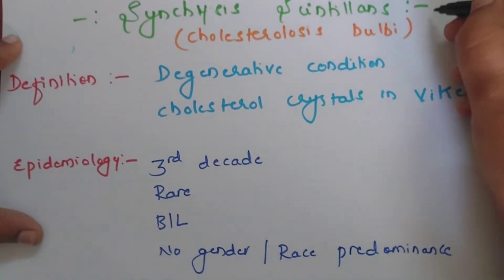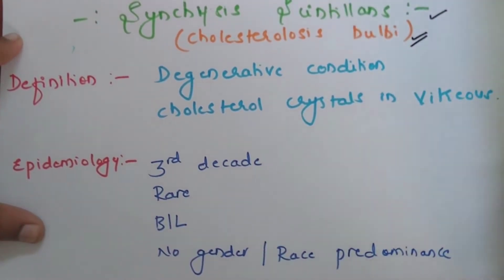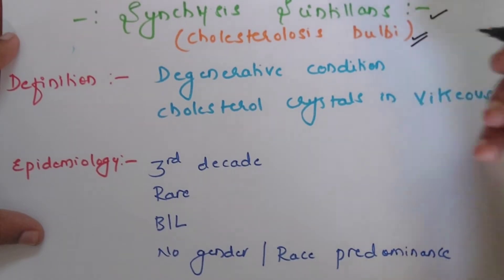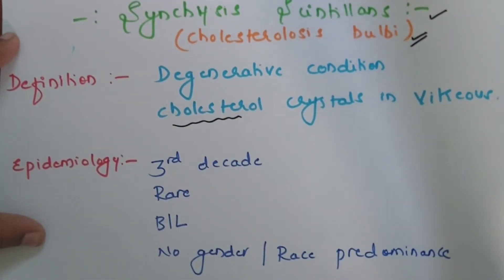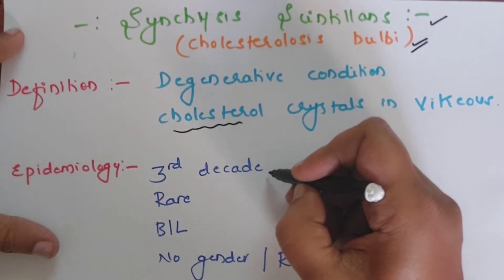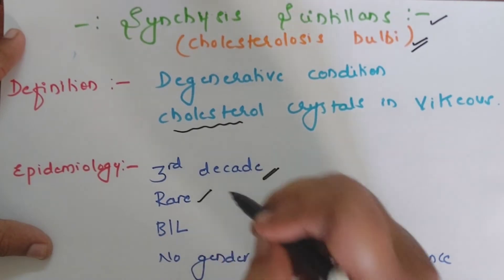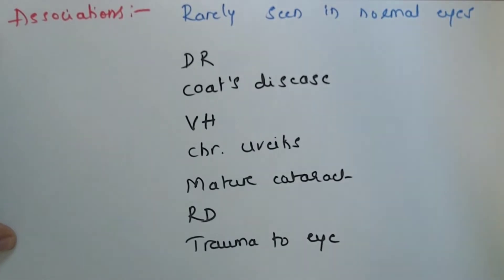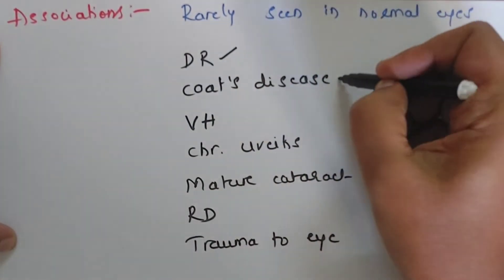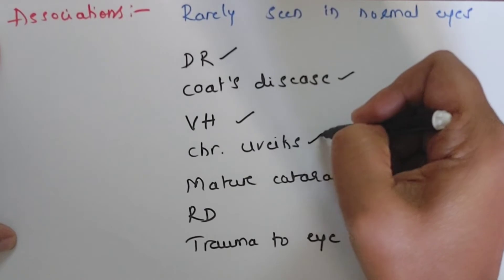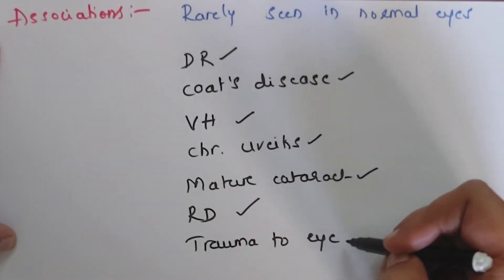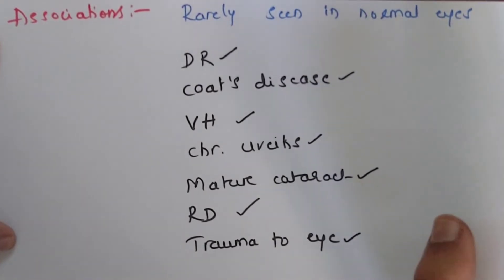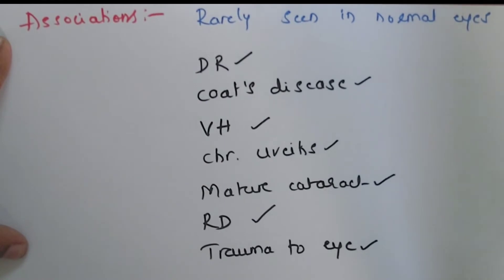The next topic is Synchisis Scintillans, also called Cholesterolosis Bulbi. This is a degenerative condition of the vitreous where cholesterol crystals are deposited. It is usually seen in an earlier age group compared to Asteroid Hyalosis — in the third decade — but is also quite rare. It is bilateral in presentation with no gender or racial predilection. Unlike Asteroid Hyalosis, Synchisis Scintillans is usually associated with other eye diseases like diabetic retinopathy, Coats' disease, vitreous hemorrhage, chronic uveitis, mature cataract, retinal detachment, and ocular trauma.